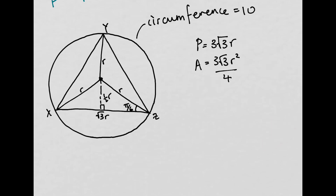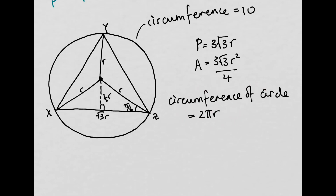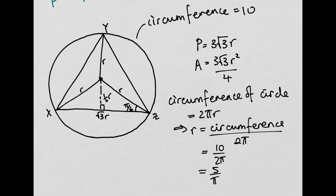Now we just need to work out what r is. We know the circumference is 10, and the circumference of a circle is 2πr. Rearranging, the radius r = circumference / (2π) = 10 / (2π) = 5/π.